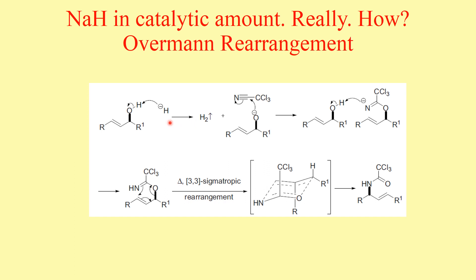That is why in this particular reaction you don't need a stoichiometric amount of sodium hydride — what you need is only the catalytic amount to generate this initial alkoxide ion. This alkoxide then reacts to give this particular intermediate, and the nitrogen is basic enough to abstract the hydrogen from the alcohol. That is why only a catalytic amount is needed.